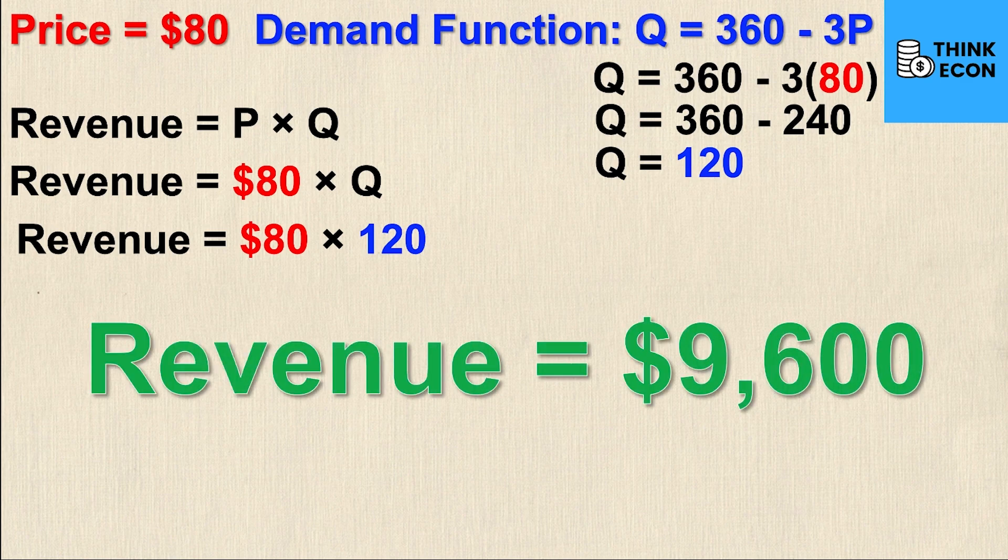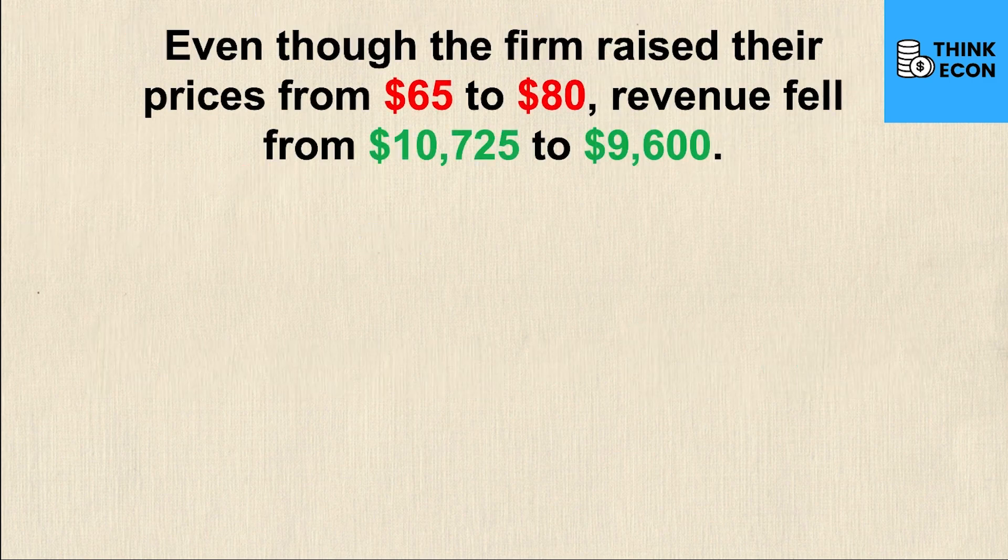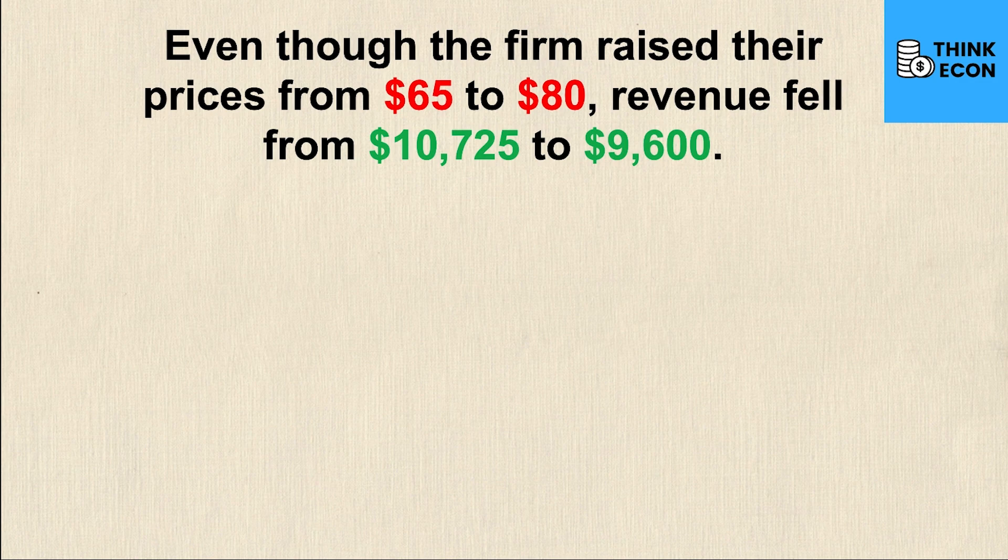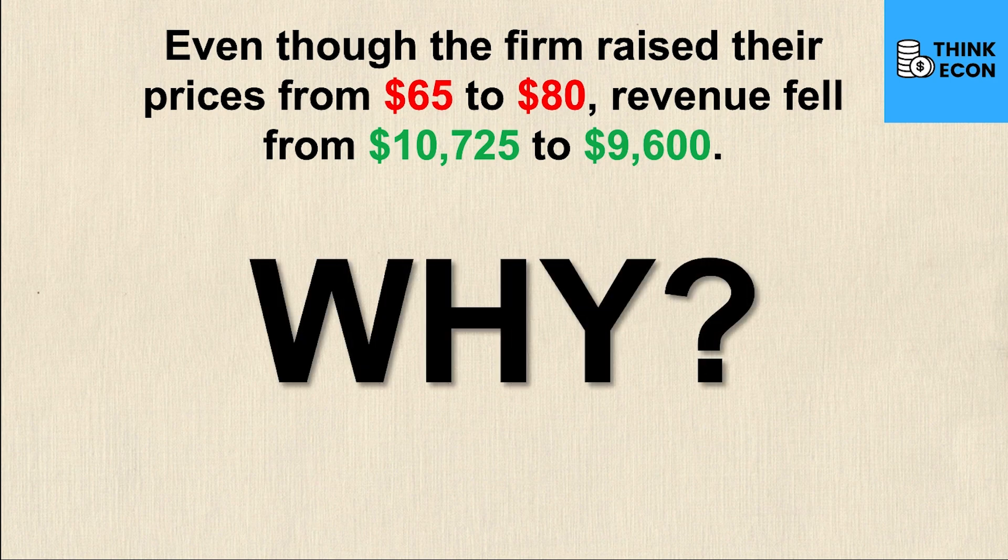So let's recap what we've just done. Even though the firm raised their prices from $65 to $80, revenue fell from $10,725 to $9,600 and the question that I'm asking you the viewer is why did this happen? I want to hear your thoughts in the comment section. Why did raising the price decrease the firm's revenue?